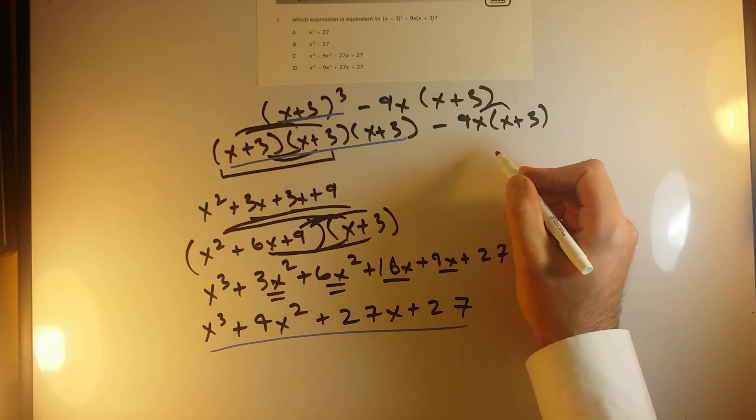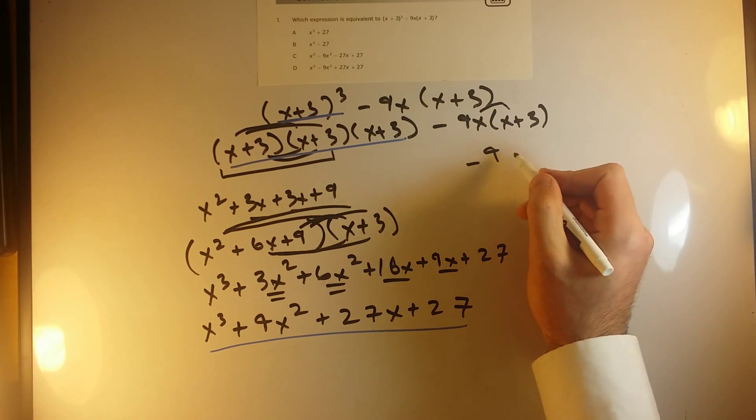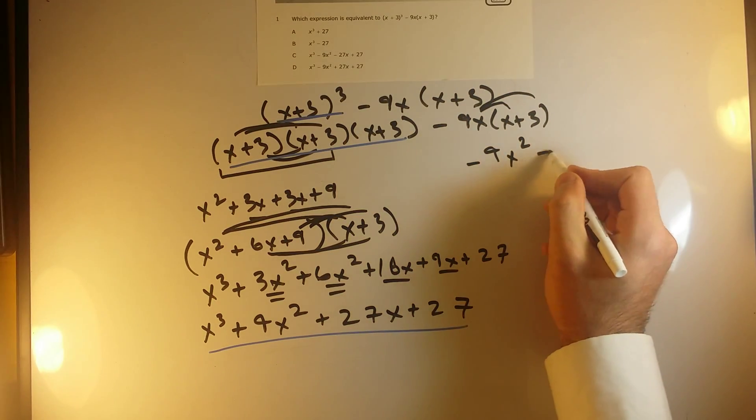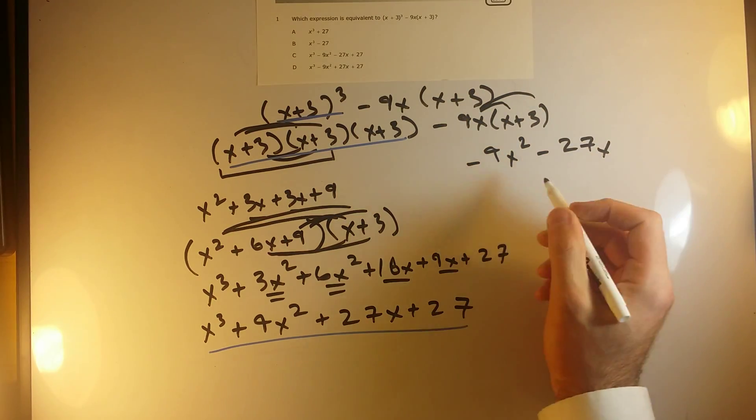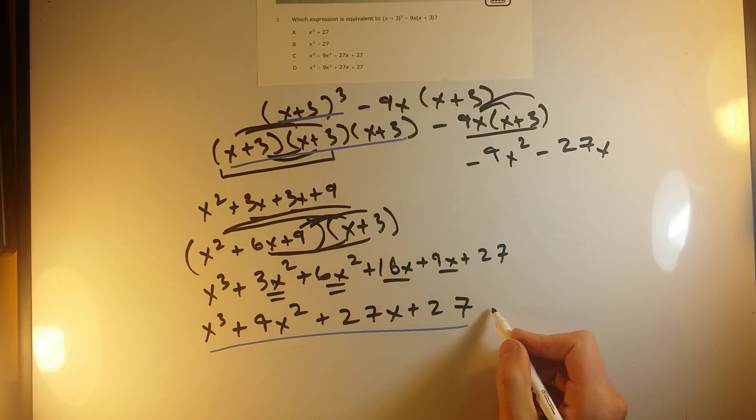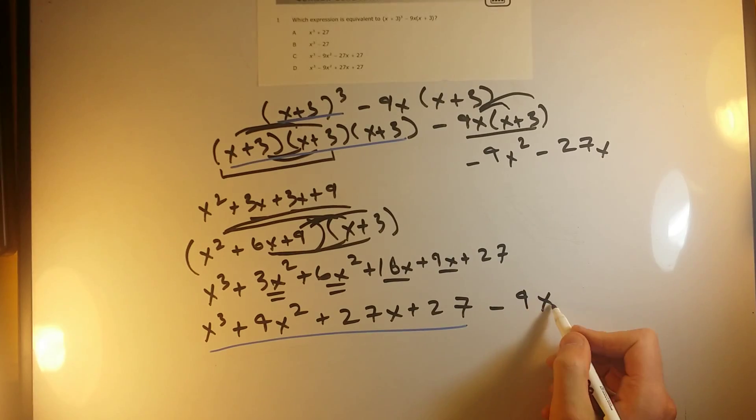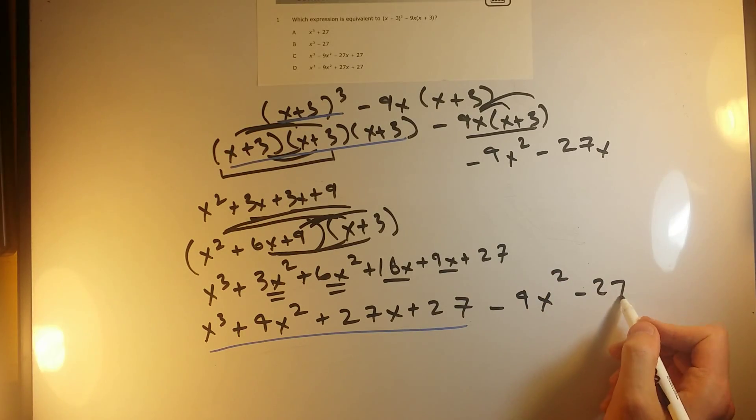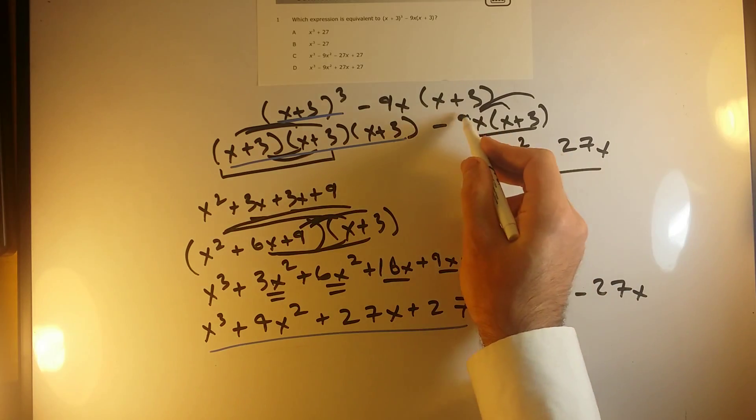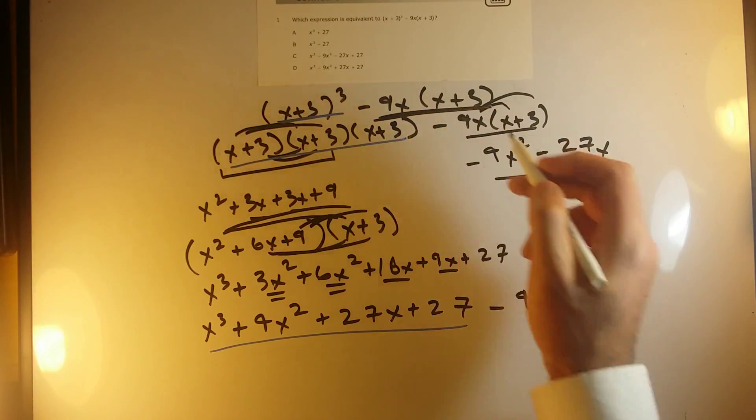So this will just be, okay, minus 9x times x gives me minus 9x squared. Minus 9x times 3 gives me minus 27x. Okay, that's this other part of the expression. Let's just bring this down as well. So I'll have minus 9x squared minus 27x. That was just this part of the expression right here, distributed.